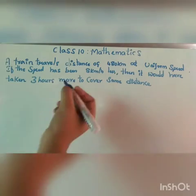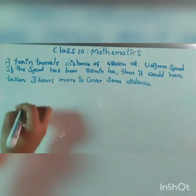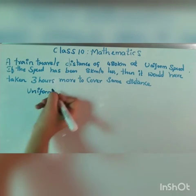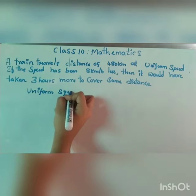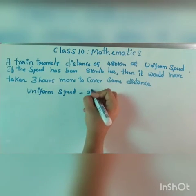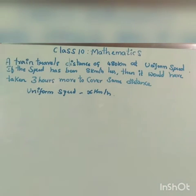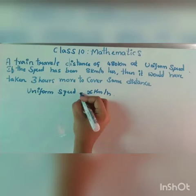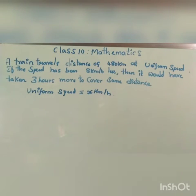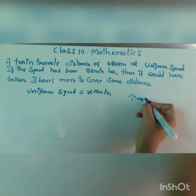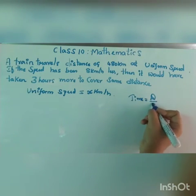They have given a uniform speed, so let us take the uniform speed as x km per hour. Everything is given in km, so time will also be in hours. You know the formula which relates speed, distance, and time: time is equals to distance divided by speed.